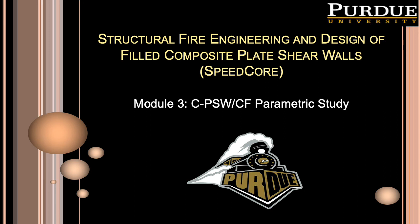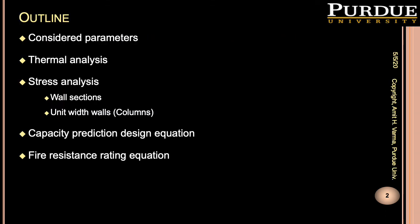The previous module described the process to develop a benchmark finite element modeling technique and validated fiber-based models to analyze composite plate shear wall systems under fire loading. An analytical parametric study was conducted to study the influence of different parameters on the fire resistance of composite plate shear walls. This module covers the considered parameters in the parametric study, the results of thermal finite element analysis and the temperature profile across the wall thickness, the results from stress analysis using both wall section and unit width wall modeling techniques, and the proposed equations to estimate the capacity at elevated temperatures and the fire resistance rating of the walls.